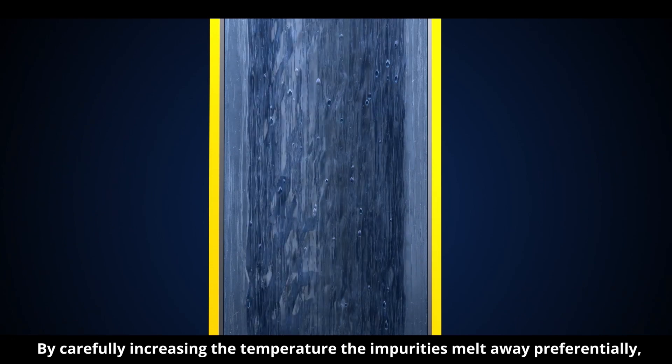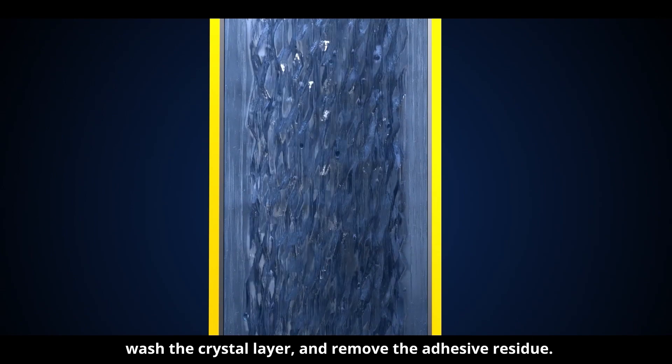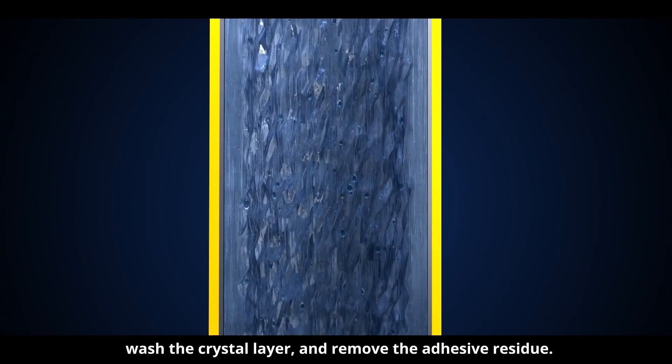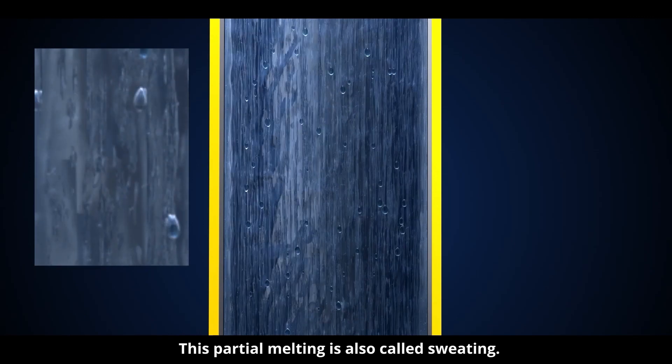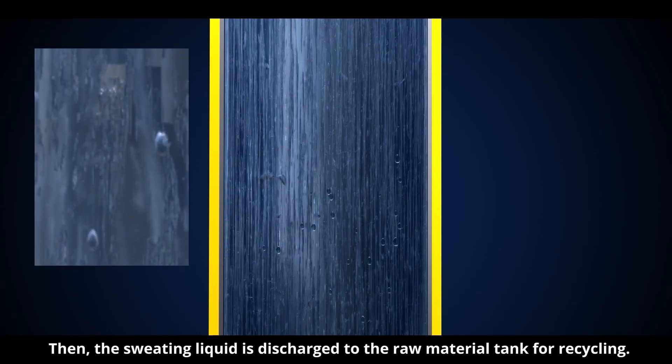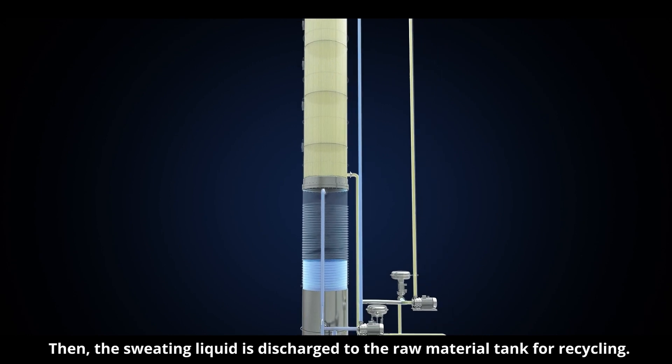By carefully increasing the temperature, the impurities melt away preferentially. Wash the crystal layer and remove the adhesive residue. This partial melting is also called sweating. Then, the sweating liquid is discharged to the raw material tank for recycling.